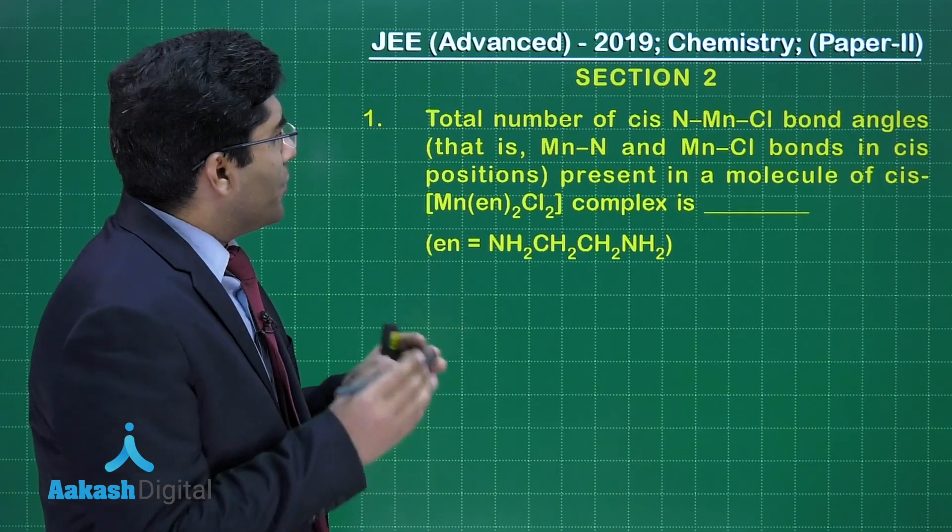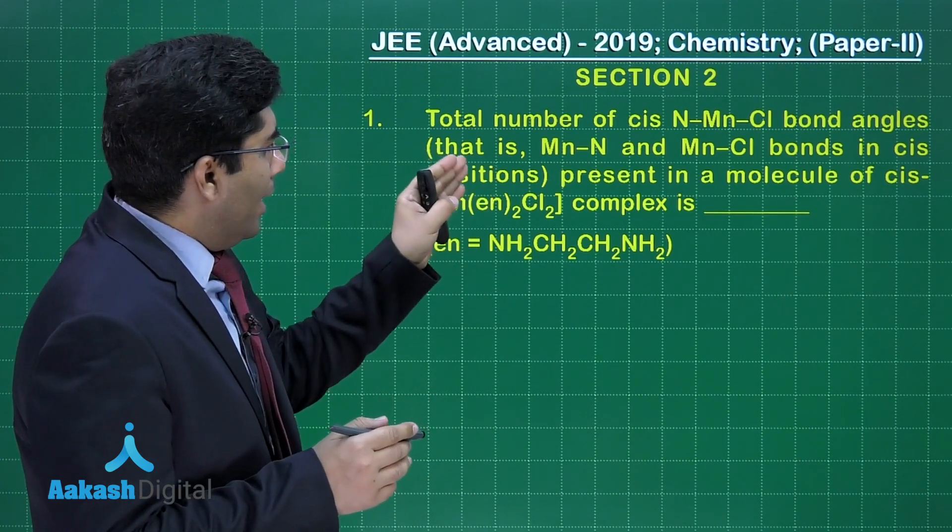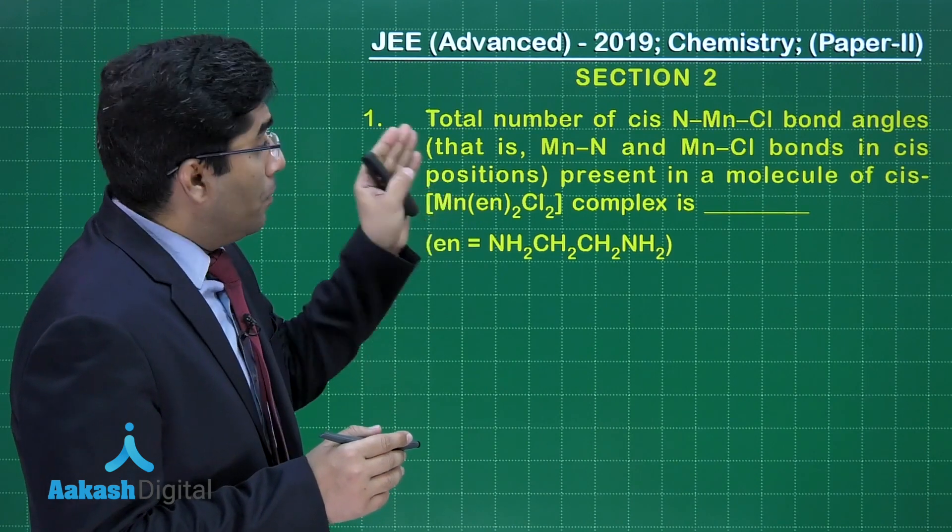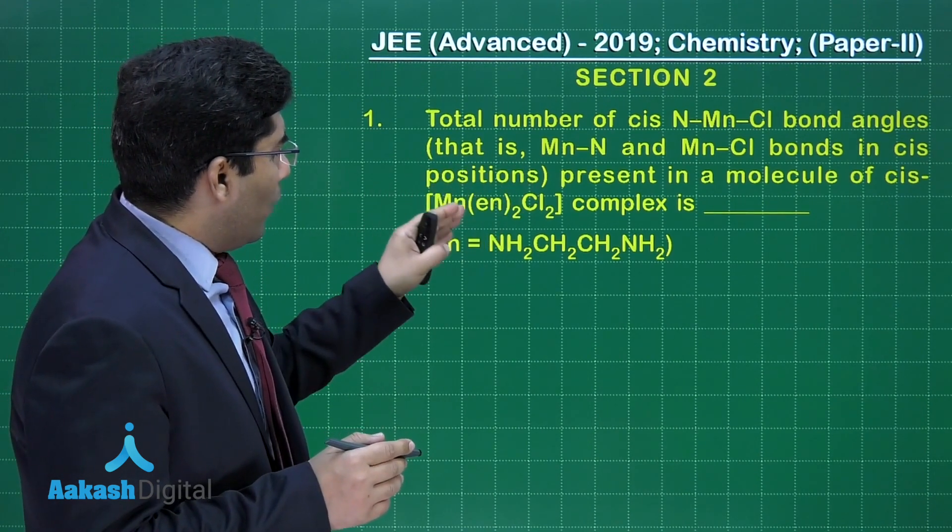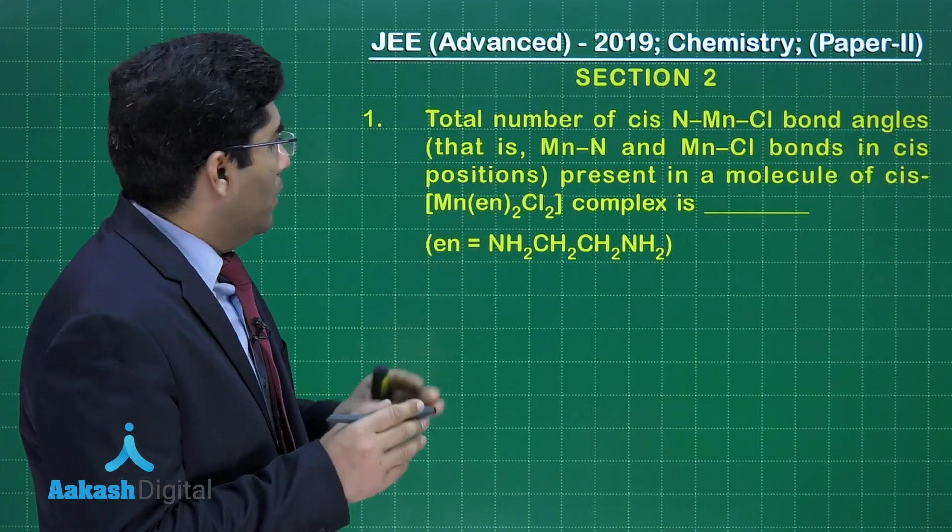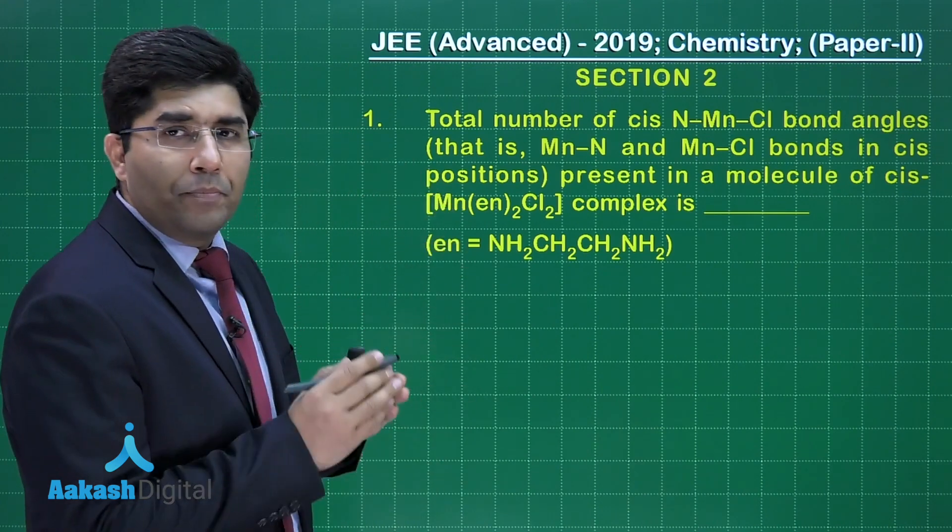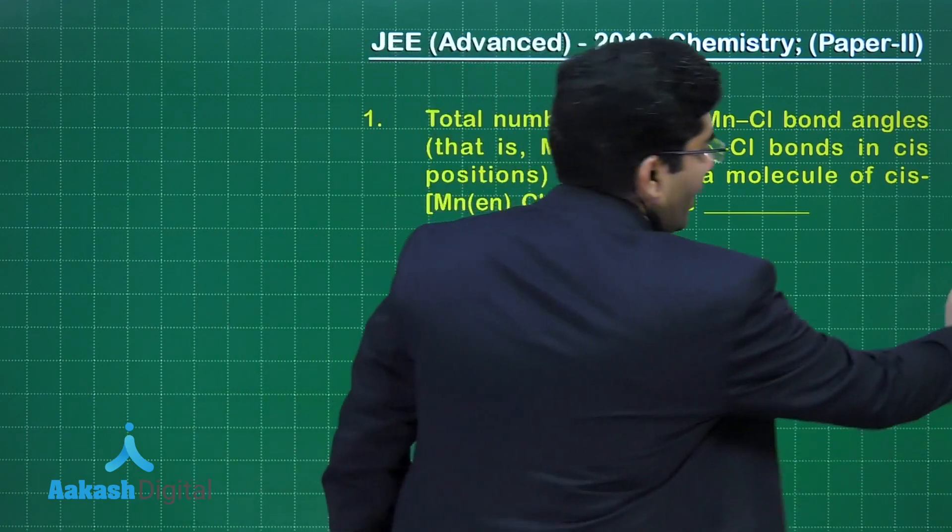In this question, we're asked about the total number of cis N-Mn-Cl bond angles (that is, Mn-N and Mn-Cl bonds in the cis position) present in the molecule of cis-Mn(en)₂Cl₂ complex. We have to find the total number of angles in this particular compound. For that, we need to draw the structure.